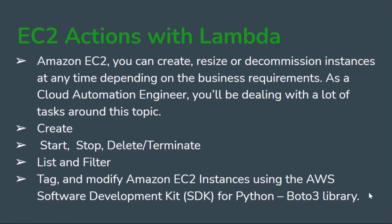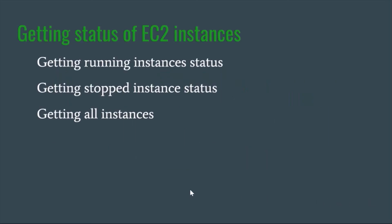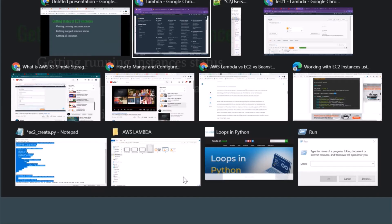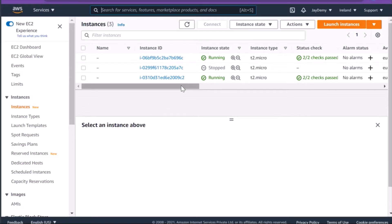For this, we need EC2 instances — either freshly created or existing ones — whose status we want to get. To create an EC2 instance using AWS Lambda with Python and Boto3 libraries, we can use the create instance method of the EC2 resource. To save time, I've already created EC2 instances manually.